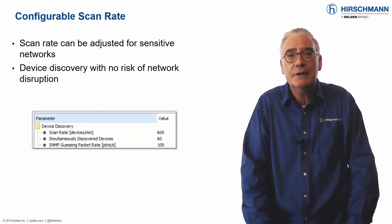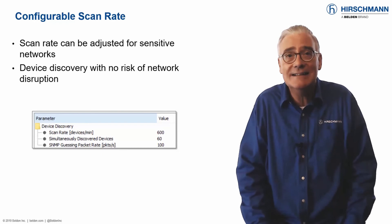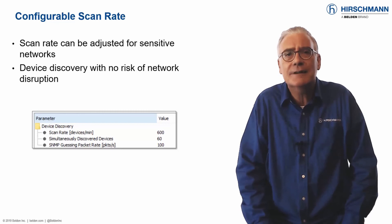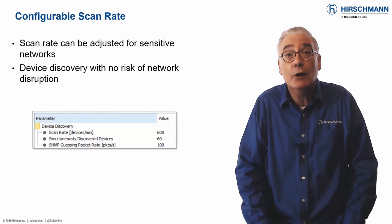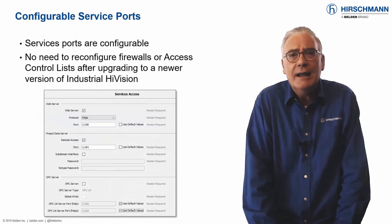Unlike office-grade network management solutions, Industrial HiVision allows discovery traffic to be throttled back to a level which can be accommodated by sensitive industrial devices. So you can be certain that a device discovery scan will not have a negative effect on the applications running on your industrial network.